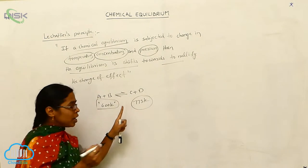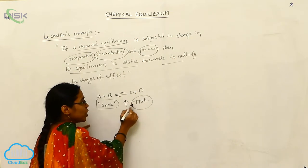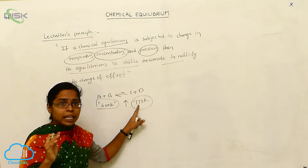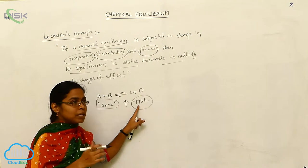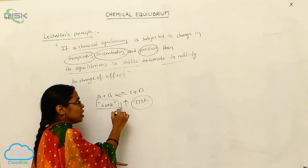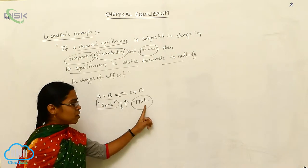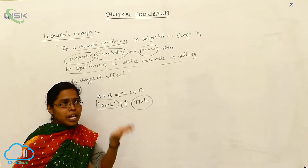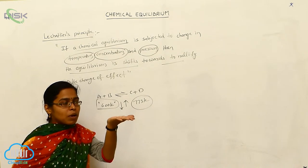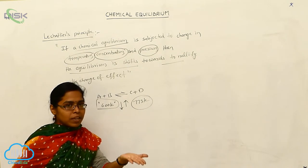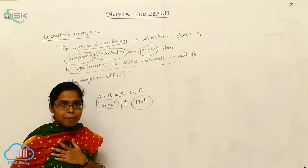On which side? Here the temperature is increased — nearly 173 Kelvin are increased. Now, to nullify this, compulsory the chemical equilibrium always shifts for the decreasing of the temperature. Why? Because we increased it. The equilibrium recognizes that temperature is increased, so compulsory the chemical equilibrium shifts to decrease the temperature.